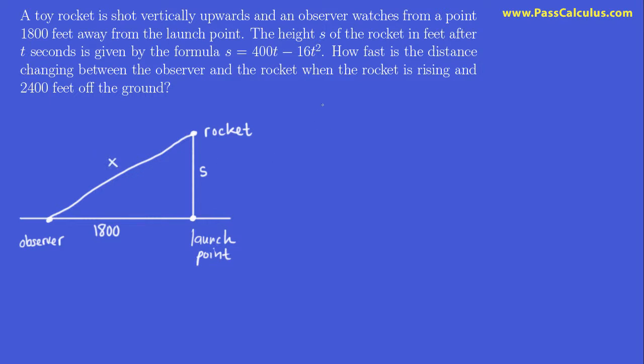Why don't we call it x? So that's a start. This is a right angle of course. What are we given and what do we want? Well, we're given the formula for s: it's 400t - 16t². And what do we want here? How fast is the distance between the observer and the rocket changing? So that's going to be dx/dt when the rocket is rising and 2,400 feet off the ground. So when s is 2,400, we want to find dx/dt.